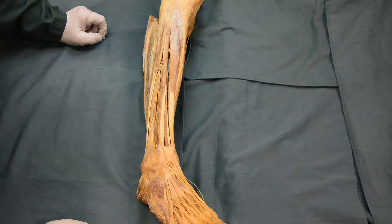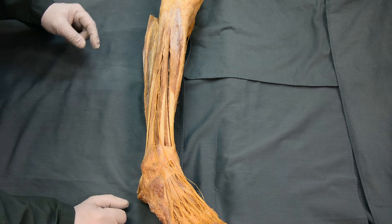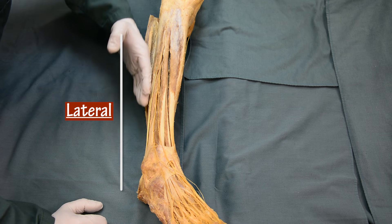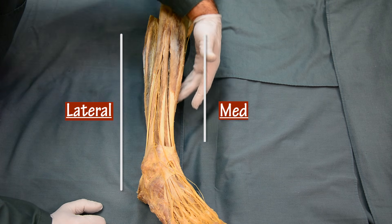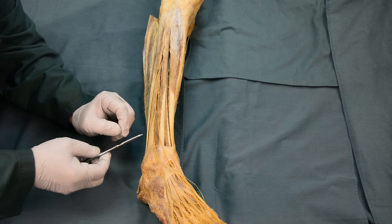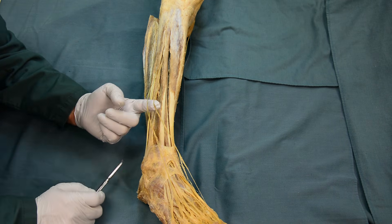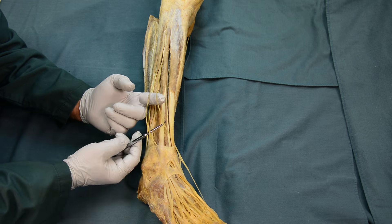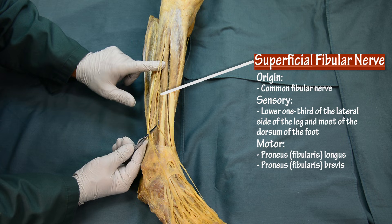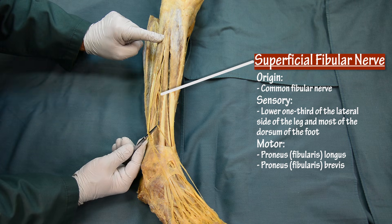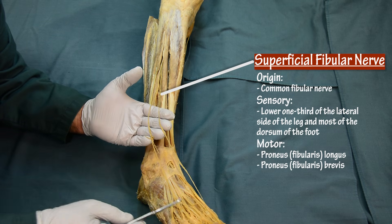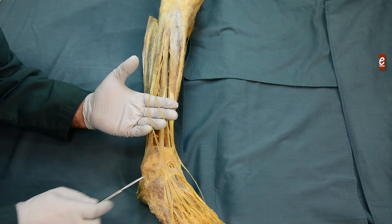In this specimen we want to review the muscles of the anterior leg and dorsum of the foot. Here is the lateral side of the right lower limb and this is the medial side. One thing you can see before we go with the muscles is the superficial fibular nerve, which is shown better in this specimen. As you recall, the superficial fibular nerve is the nerve of the lateral compartment of the leg, and it comes to the skin on the dorsum of the foot.